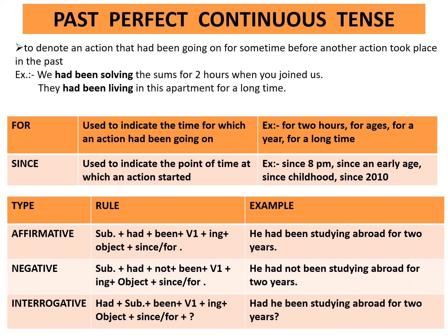Interrogative rule: had plus subject plus been plus first form of the verb plus ing plus object plus since or for plus question mark. Example: Had he been studying abroad for two years?